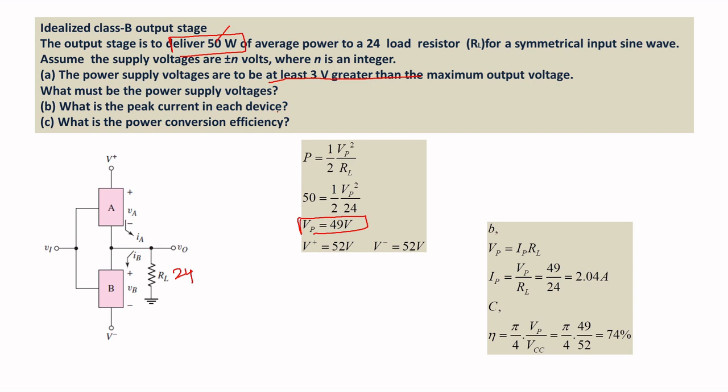Next, we find the peak current in the device. The formula is VP = IP × RL, so peak current IP = VP / RL = 49 / 24, which gives approximately 2.04 amps.